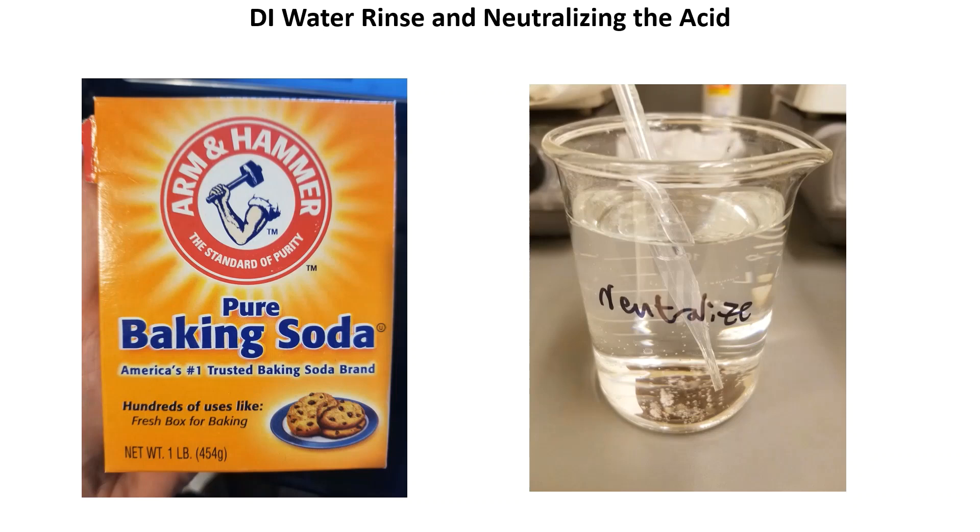After anodizing was completed I rinsed the part in DI water and then soaked it in a bath of baking soda and DI water for a couple of minutes. I used 28 grams of baking soda per liter of DI water. This is to neutralize any of the remaining sulfuric acid before dying the part, as that could cause streaks and ruin the color. After the baking soda bath I rinsed with DI water again. At this point I dried the part off and took it to the scanning electron microscope to try to capture what the aluminum oxide structure looked like. So if my color got screwed up it was because I handled it before dying it even though I was wearing gloves, or because there was a gap in time between anodizing and dying it.